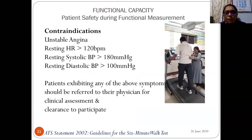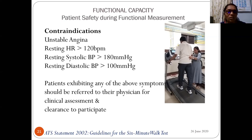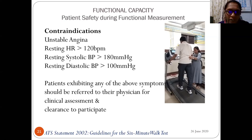Before measuring functional capacity, patient safety must be considered. Absolute contraindications include: unstable angina, resting heart rate more than 120 beats per minute, resting systolic blood pressure more than 180 mmHg, and resting diastolic blood pressure more than 100 mmHg. Patients exhibiting any of these should be referred to a physician for clinical assessment and clearance before participating.